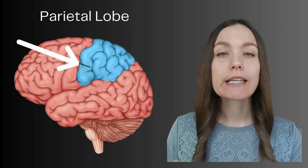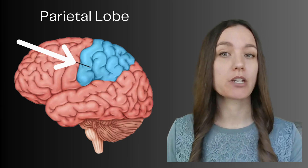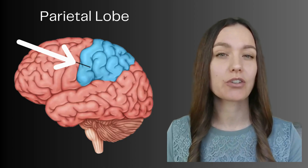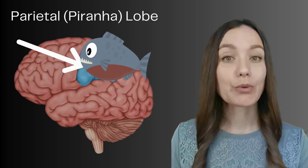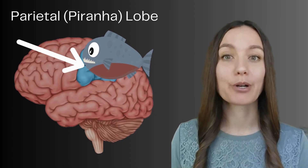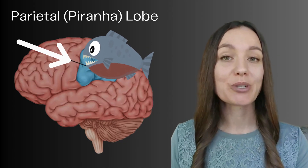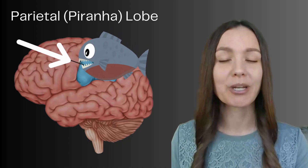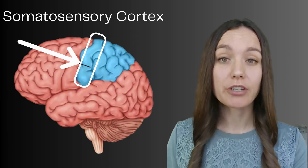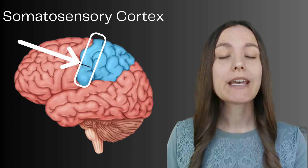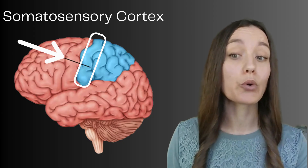The parietal lobe is located near the top and towards the back of the brain, just behind the frontal lobe. This is where we process sensory information from the body — specifically touch sensations like pressure, temperature, and pain — and it also helps us understand our spatial awareness. To remember the parietal lobe, think of 'parietal piranha.' If a piranha chomped on your leg, you would be interpreting that pain or touch sensation in your parietal lobe. There's a specific location within it called the somatosensory cortex, which sits at the front of the parietal lobe right behind the motor cortex.